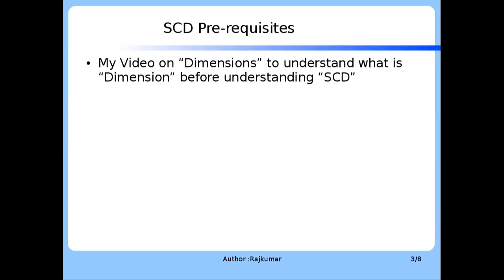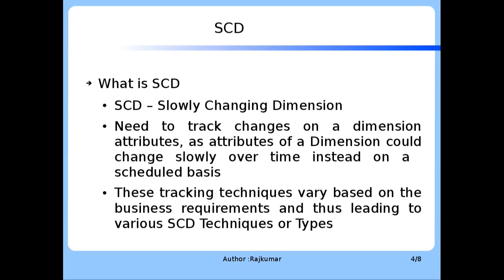What is SCD? SCD stands for Slowly Changing Dimension. There is a need to track changes on dimension attributes because attributes of a dimension could change slowly over time instead of on a frequent or regular basis. Hence there is a need to implement SCD in the data warehouse. These tracking techniques vary based on the business requirement, leading to various SCD techniques or types.